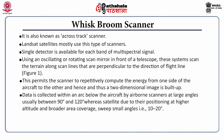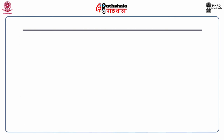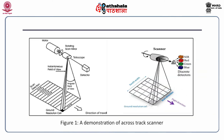Data is collected within an arc below the aircraft by airborne scanners at large angles, usually between 90 and 120 degrees, whereas satellites — due to their higher altitude and broader area coverage — sweep small angles of about 10 to 20 degrees. With the forward motion of the aircraft, successive scan lines are covered, giving a series of contiguous narrow strips comprising a two-dimensional image. The area covered by the satellite at any instant is called the instantaneous field of view, and the ground resolution cell is the pixel — the smallest unit of the image covered in a scan.